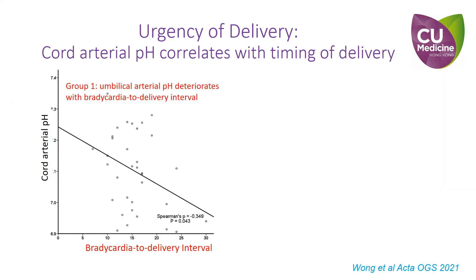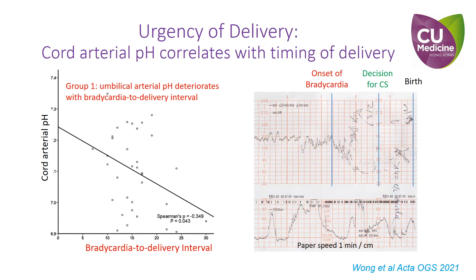Furthermore, we showed that umbilical cord pH dropped significantly with bradycardia-to-delivery interval instead of decision-to-delivery interval. This is understandable as the actual onset of hypoxia starts at the time of bradycardia, not the time when a clinician makes the decision. That is also why previous studies could not show any correlation using decision-to-delivery interval. Therefore, this group of fetuses should be delivered as soon as possible, and the 30-minute rule is rather too loose to ensure fetal safety.